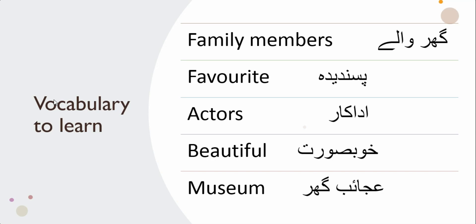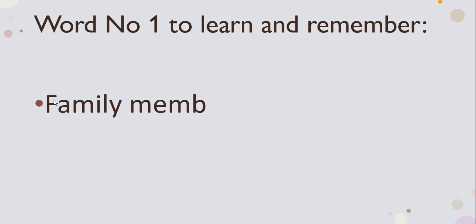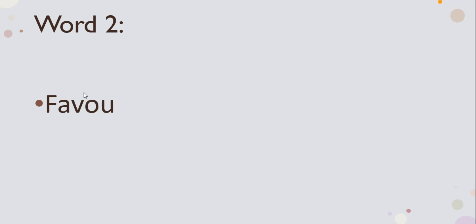Now let's review the words one by one. Pay attention. The first word you learned and need to remember is family — ghar wale. If you struggle to learn quickly, pause the video on this slide and remember how to write ghar wale. The next word is favorite — pasandida.